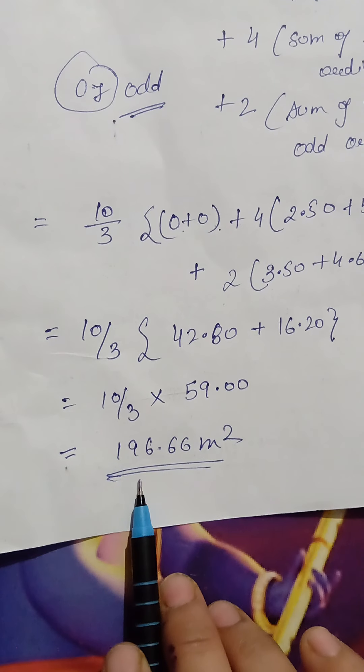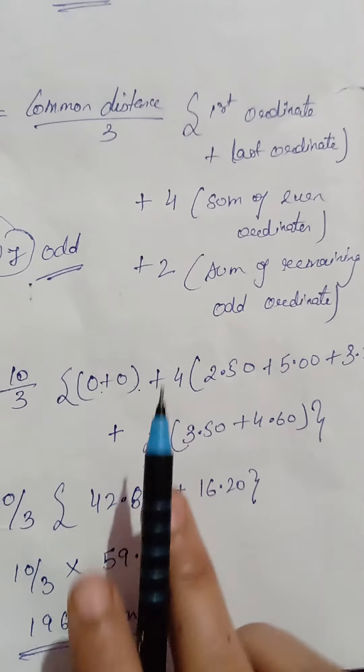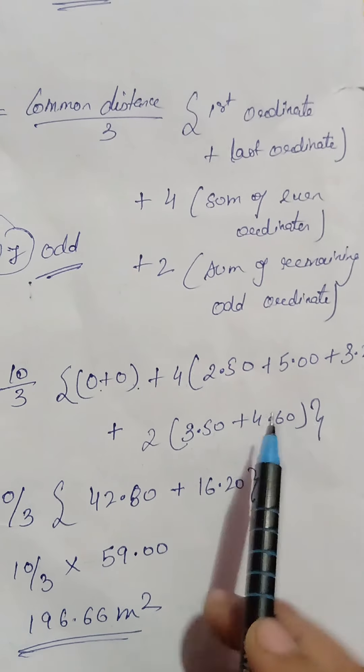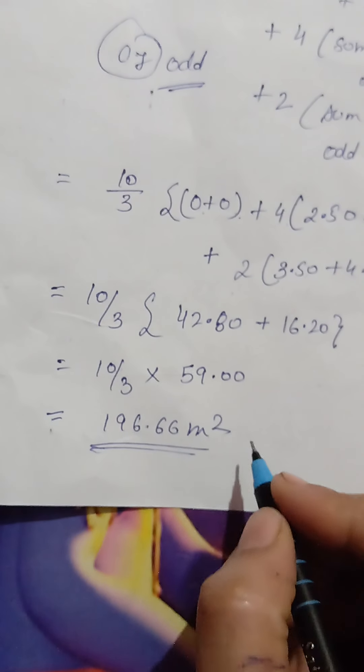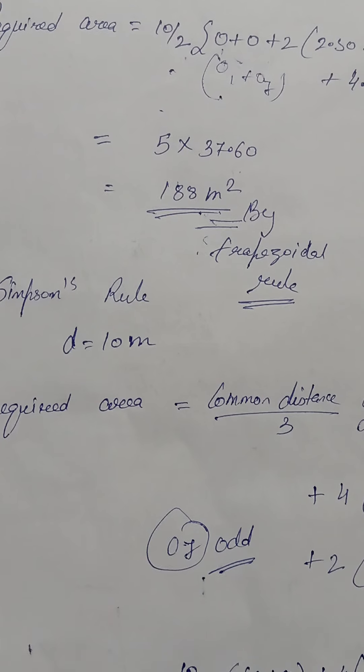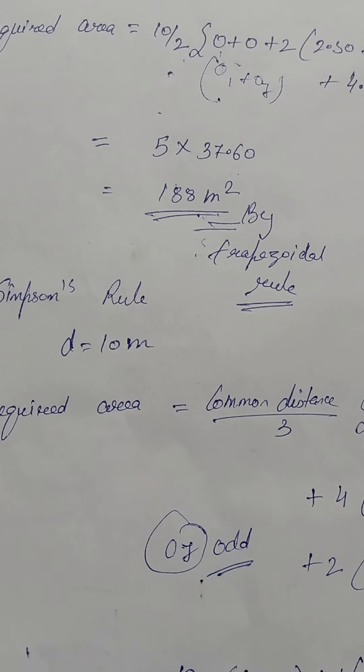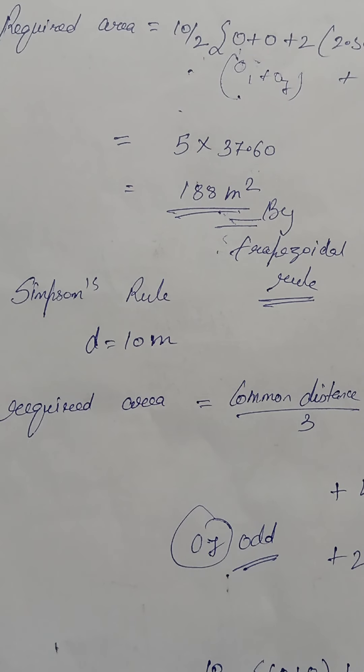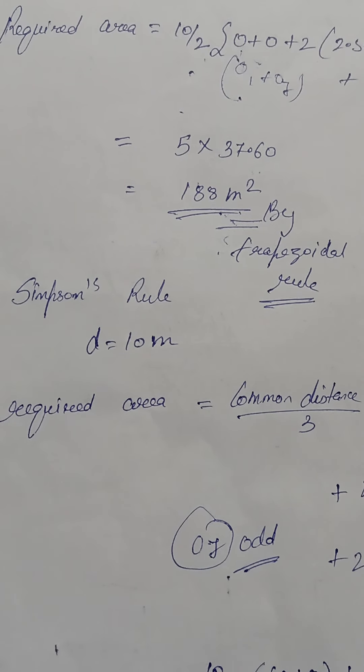So common distance by 3 is 10 by 3. First ordinate is 0, last ordinate is 0. Plus 4 times the even ordinates: 2.5, 5.0, 3.20 — summed up. Plus 2 times the sum of the odd (intermediate) ordinates. You can count the ordinates: 1, 2, 3, 4, 5, 6, 7. Working through the calculation gives the total area by Simpson's rule.